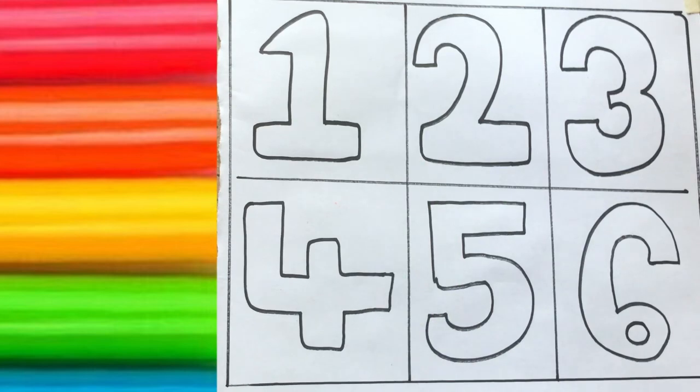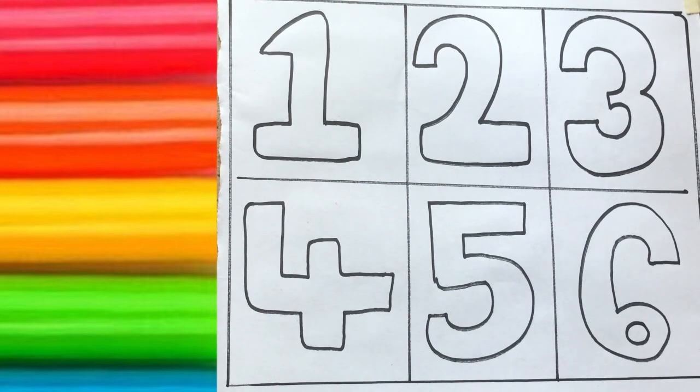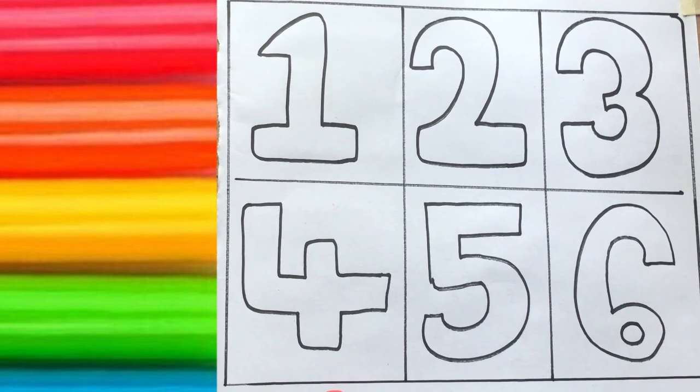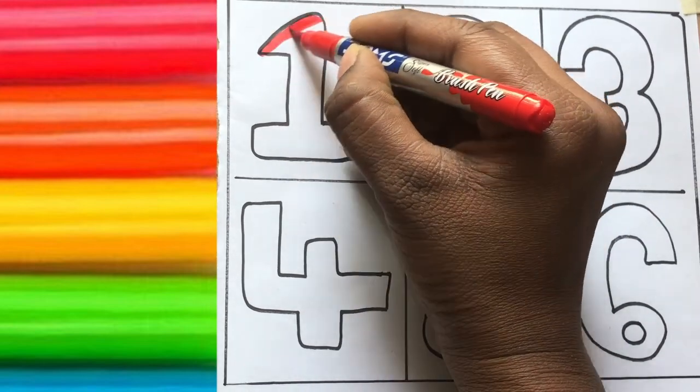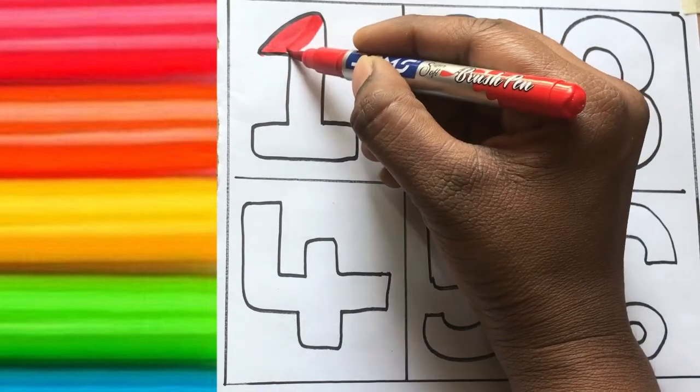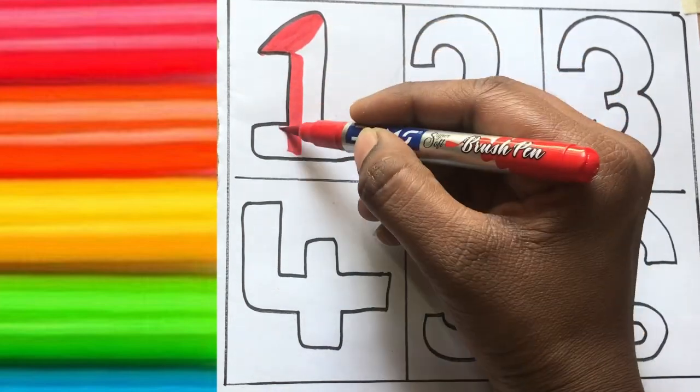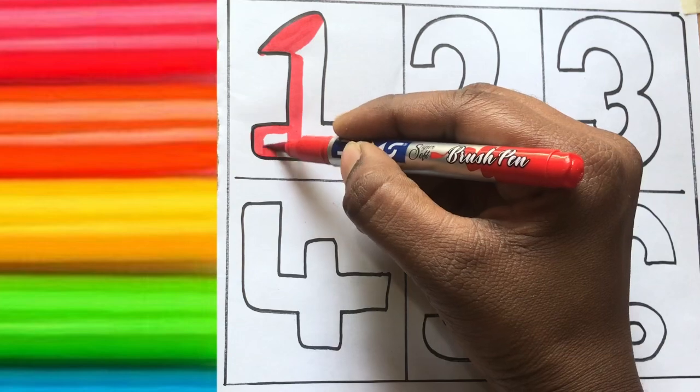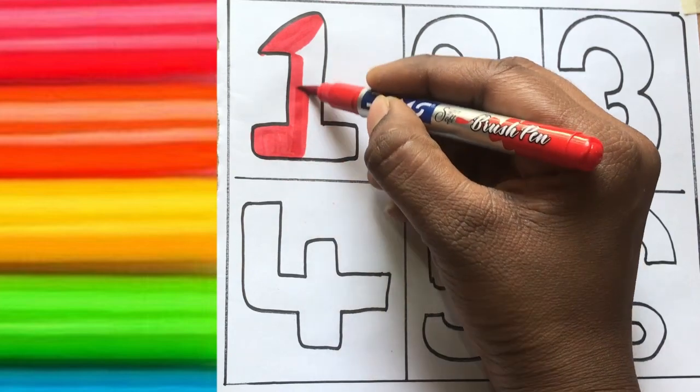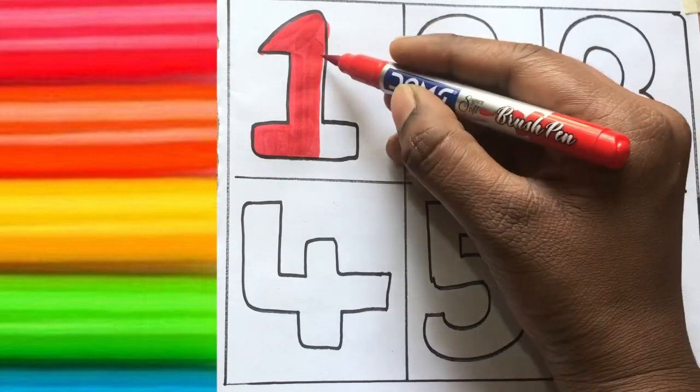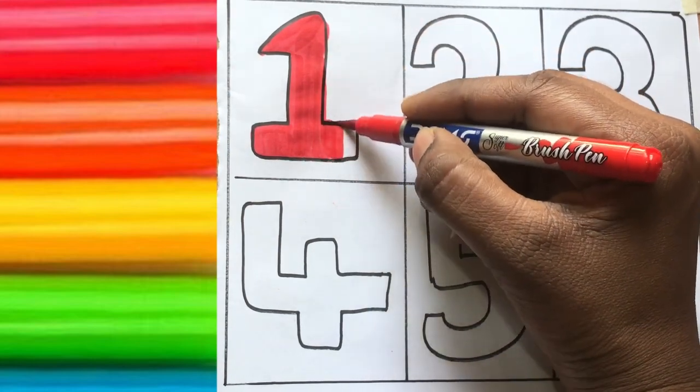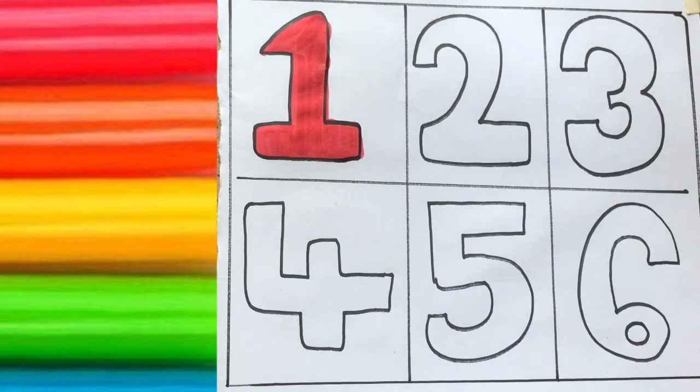Ok, Let's draw the shapes. Number shapes. Ok, Red color 1. O-N-E, One. Number one.